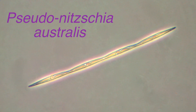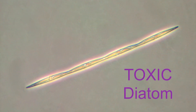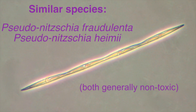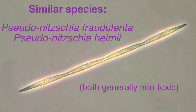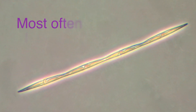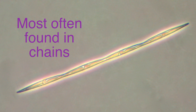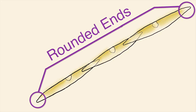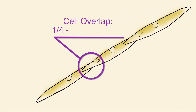Pseudo-nitzschia australis, a large-type Pseudo-nitzschia species, is toxic and similar under the light microscope to Pseudo-nitzschia fraudulenta and Pseudo-nitzschia heimii, both generally non-toxic species. They are normally found in chains, have more rounded ends than the other types, and cells in chains overlap about one-fourth to one-third the cell length.